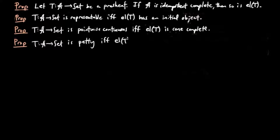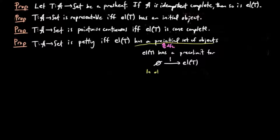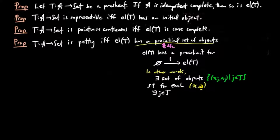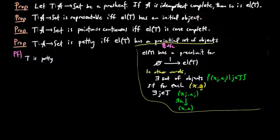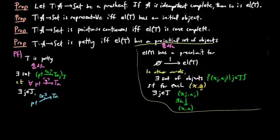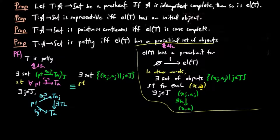Finally, we show T is petty if and only if the category of elements of T has a pre-initial set of objects, which is defined to be a pre-colimit for the empty diagram. In other words, there exists a set of objects {(x_j, a_j)} such that for each object (x, a), there exists an index j in J and a morphism h from (x_j, a_j) to (x, a). To prove this, we have the definition of T being petty as there existing a set of elements x_j in T(a_j) such that for each element y of T(A), there exists an index j in J and a morphism h from a_j to A such that T(h)(x_j) equals y, which is precisely the definition of the category of elements of T having a pre-initial set of objects. And that completes the translation process of terms in the general representability theorem into conditions on categories.